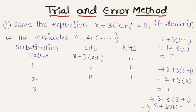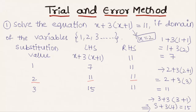We observe that when x is equal to 2, the LHS is equal to RHS. So the solution of the equation is x equal to 2. This was the basic introduction on how to solve a simple equation using the trial and error method. Hope you understood the concept. Do like and subscribe to vteachacademy.com. Thanks for watching. Have a nice day.